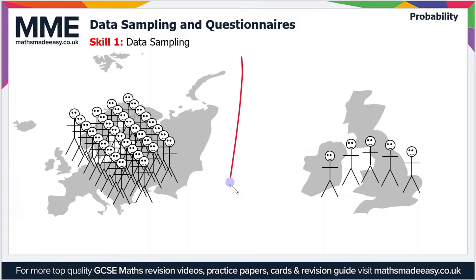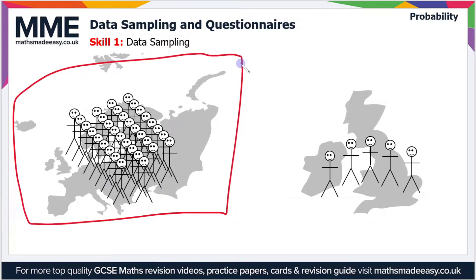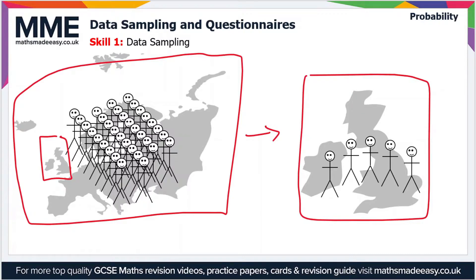So what we can do, instead of asking the whole population of Europe — as shown in the diagram on the left — we can ask just a small portion of the population of Europe, like the population of the UK, as shown in the diagram on the right. Here we're using the UK population to represent all of Europe. Obviously that's not necessarily the most reliable method, because people in the UK might have different opinions to people in France, Spain, or Russia. But the advantage is that it saves time and money, while assuming the results are representative of the entire population.